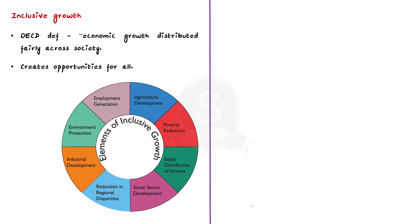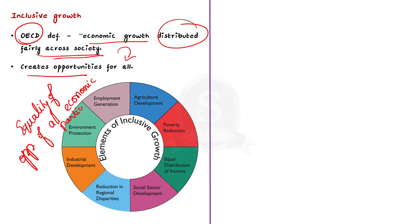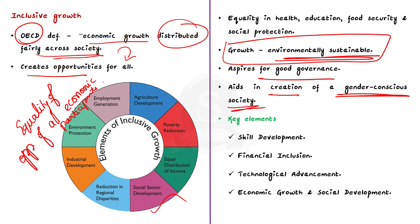Now let's start with the term inclusive growth. According to the Organization for Economic Cooperation and Development, inclusive growth means economic growth that is distributed fairly across the society and creates opportunities for all. In broad terms, inclusive growth means equality of opportunities for all economic participants in the country — equality in all aspects, that is equality in health, education, food security, and social protection. It also includes a method of growth that is environmentally sustainable, aspires for good governance, and aids in the creation of a gender-conscious society.